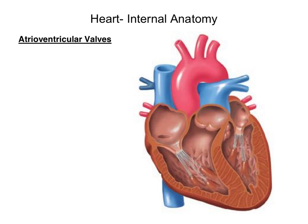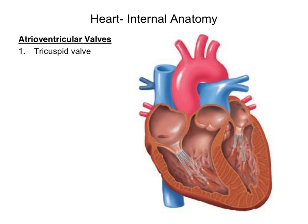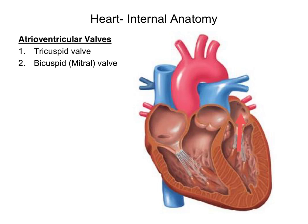Let's take a closer look at the atrioventricular valves. There are two atrioventricular valves found in the heart. The first valve is called the tricuspid valve, found between the right atrium and the right ventricle. Its function is to prevent oxygen-poor blood in the right ventricle from flowing back up into the right atrium. The second atrioventricular valve is called the bicuspid or mitral valve, found between the left atrium and the left ventricle, and its function is to prevent oxygen-rich blood in the left ventricle from flowing back up into the left atrium.